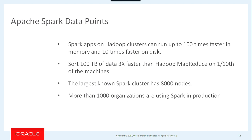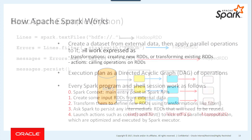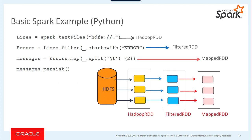Talking about how Apache Spark works: Spark starts with a context, a DAG, and so on. This is a basic example showing how to go from HDFS into the Hadoop RDD and then do some transformations — always transformations — and then apply persistence on the final data you want to preserve.